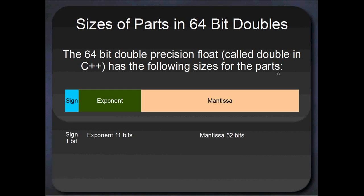The sizes of the parts in a 64 bit double are pretty similar, just a bit larger. Once again, we've got a single bit for the sign. You only need one bit to represent negative or positive. The exponent in a 64 bit double is 11 bits long, and the mantissa is 52 bits. So 52 plus 11 plus 1 gives us all 64 bits of a double.